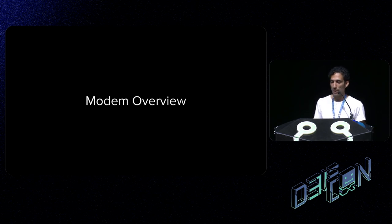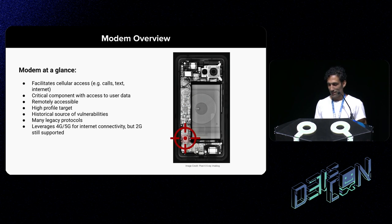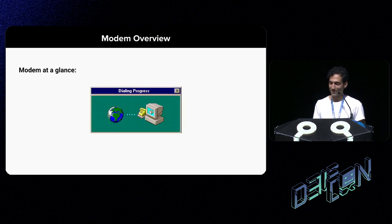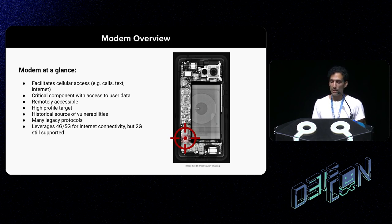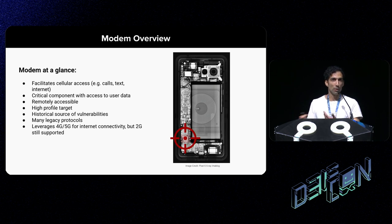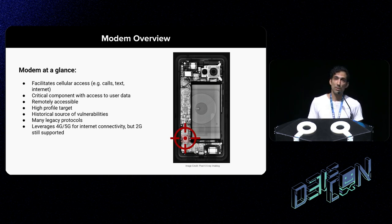Before getting into findings and exploit work, some background on the Pixel modem. It provides a means to connect to a cellular network to check texts, surf the web, and receive phone calls. It's a critical component with access to sensitive user data like SMS, remotely accessible via radio technologies, and a high-profile target for nation-states and Project Zero. It's a historical source of vulnerabilities because it uses legacy protocols. Importantly, while we're all on 4G and 5G today, it still supports the 2G standard — an important theme throughout this presentation.